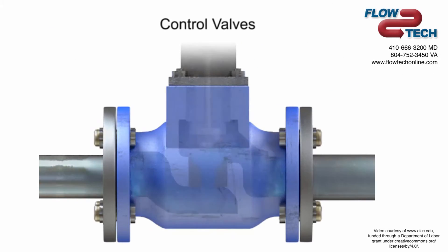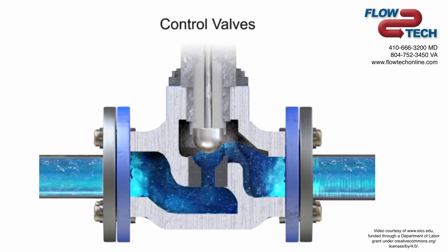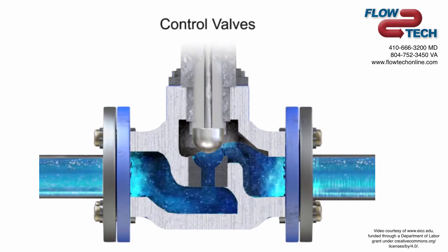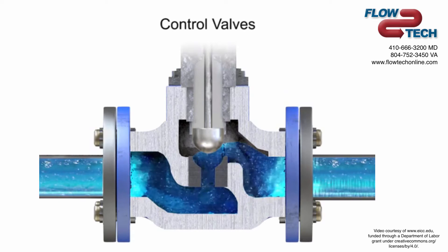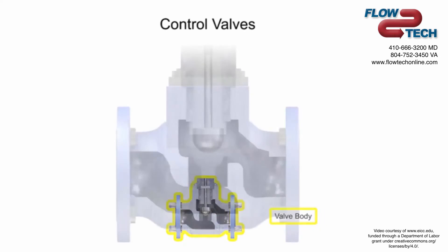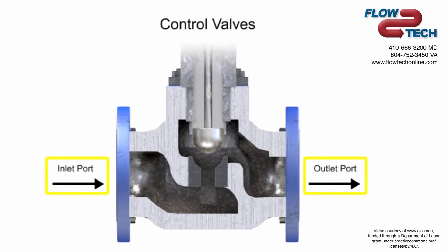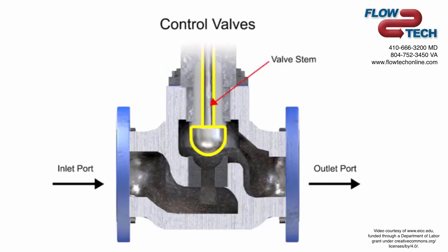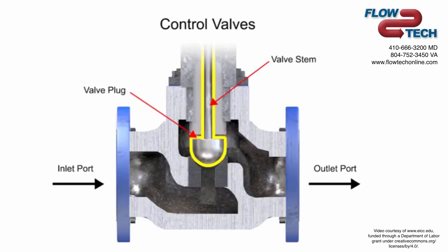Control valve actuators control fluid in a pipe by varying the orifice size through which the fluid flows. Control valves contain two major components: the valve body and the valve actuator. The valve body provides the fluid connections and a movable restrictor comprised of a valve stem and plug that is in contact with the fluid to vary the flow. The valve actuator is the component that physically moves the restrictor to vary the fluid flow.